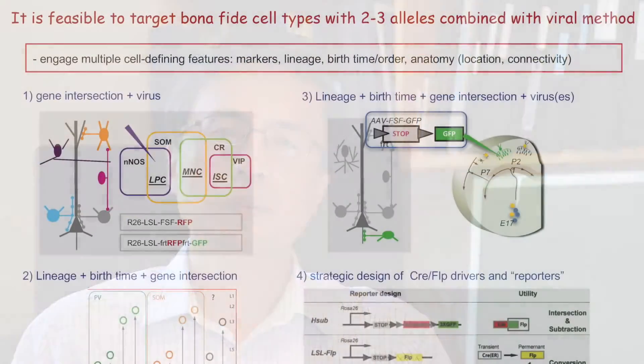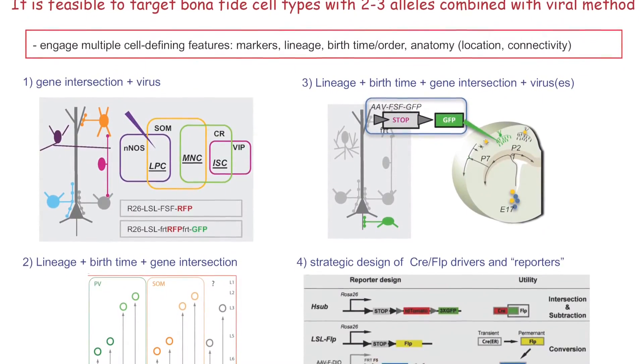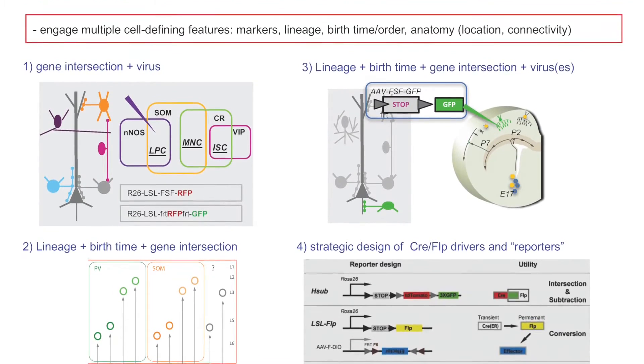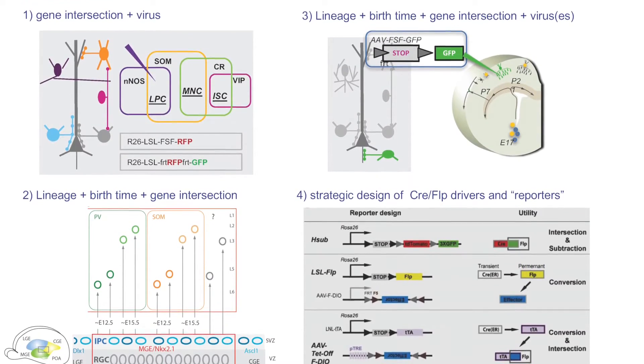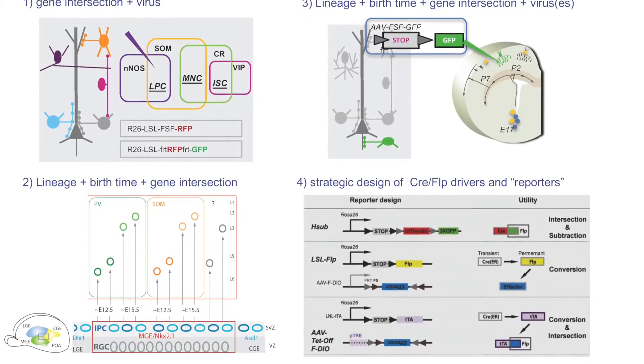The good news in this paper is that we have developed new combinatorial methods and tools to demonstrate that it is feasible to substantially increase the specificity of targeting cell types using only two to three genes. The key strategy is not simply to use the overlapping pattern of two to three genes, but to further leverage these expression patterns to engage a series of cell-defining features, such as their lineage, their time of birth, and their anatomy by using viral vectors.